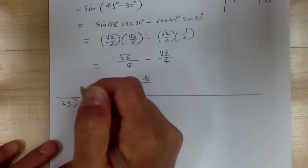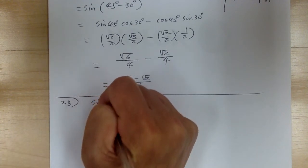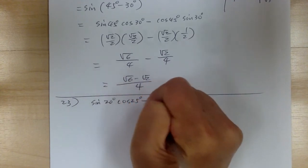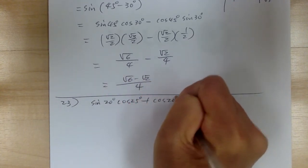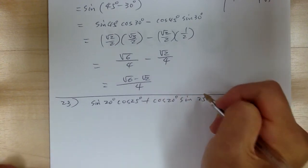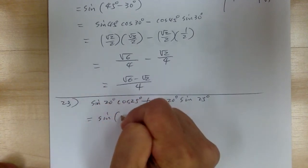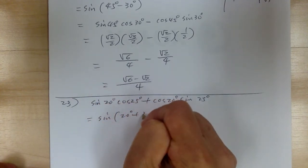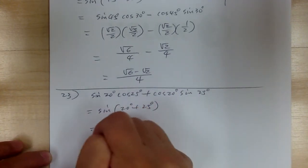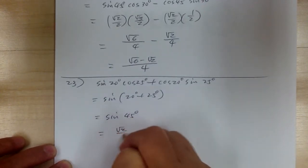Let's go to 23. You have sine of 20 degrees, cosine of 25 degrees, plus cosine of 20 degrees, sine of 25 degrees. This is your sine sum identity. So this is equal to sine of 20 degrees plus 25 degrees, which gives you sine of 45 degrees, and that equals square root of 2 over 2.